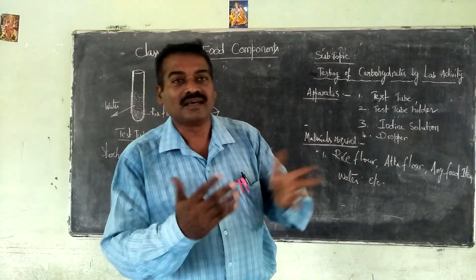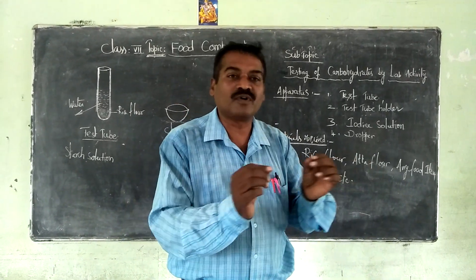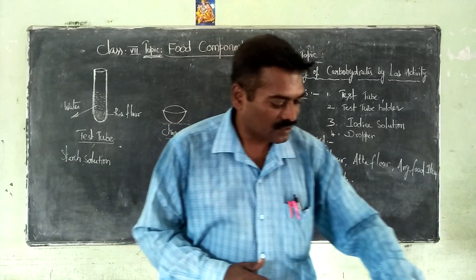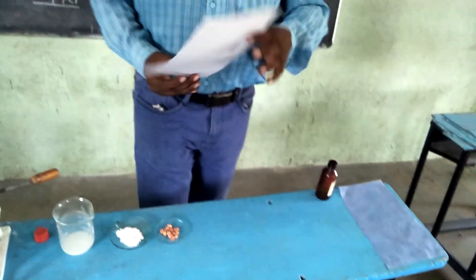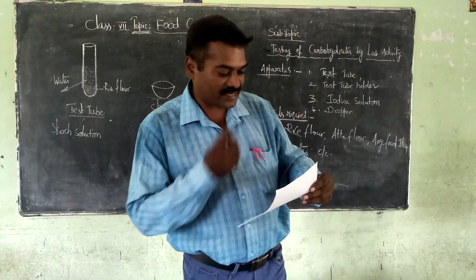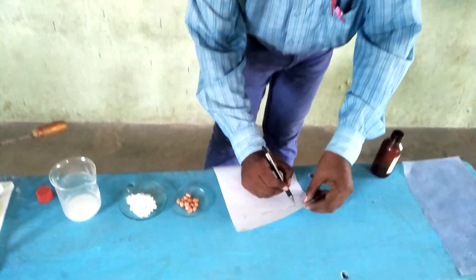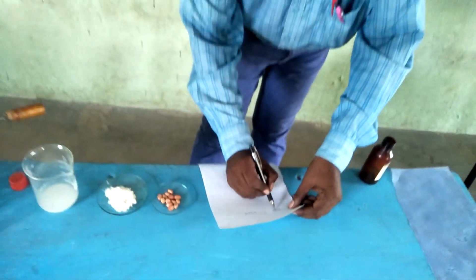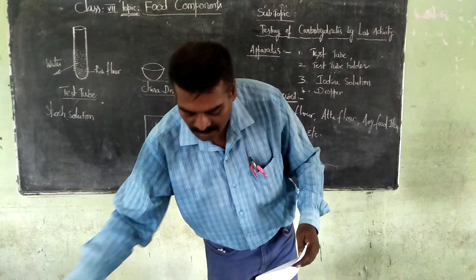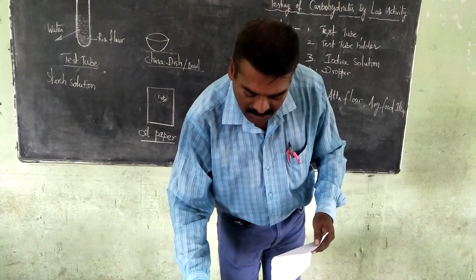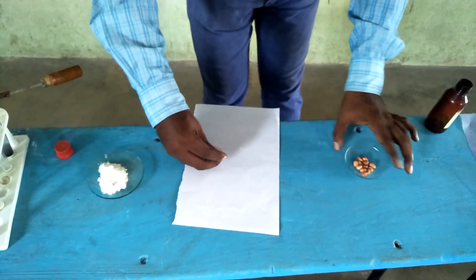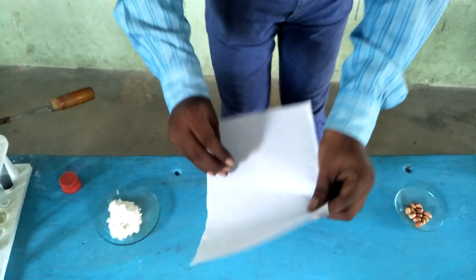Most children should now be clear on carbohydrate testing. Now for the second part — testing for fats content present in food. I want to present a simple demonstration. For that, we require white paper. I am writing the word 'FATS' on the paper. Then I am taking a groundnut seed and crushing it.